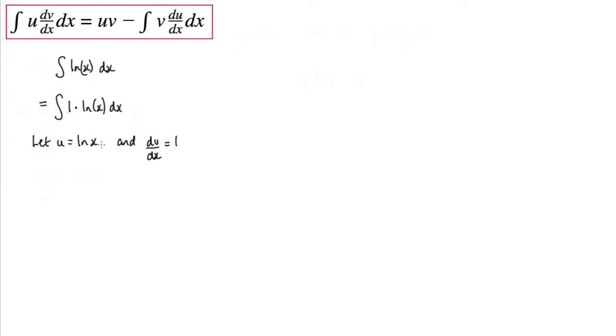Now we need to differentiate this, so du by dx. And the differential of log x is 1 over x. And when we integrate 1, we will get x. And we'll ignore the constant of integration and pop that in at the end.